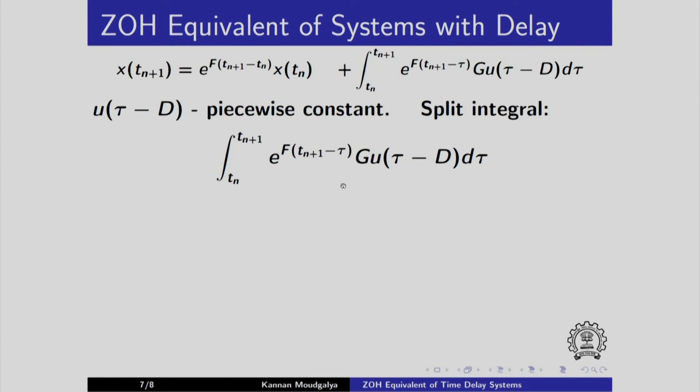We will split the integral as follows. We will split it from tn to tn plus 1. We write this whole thing. We keep this u out and what is the value of u over this interval? Recall that we already did this calculation. u of tn minus 1, the value that it had in the previous time instant.